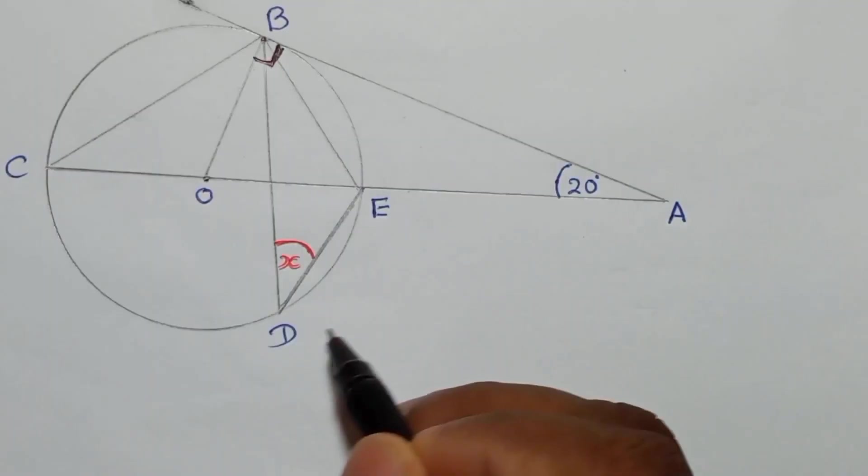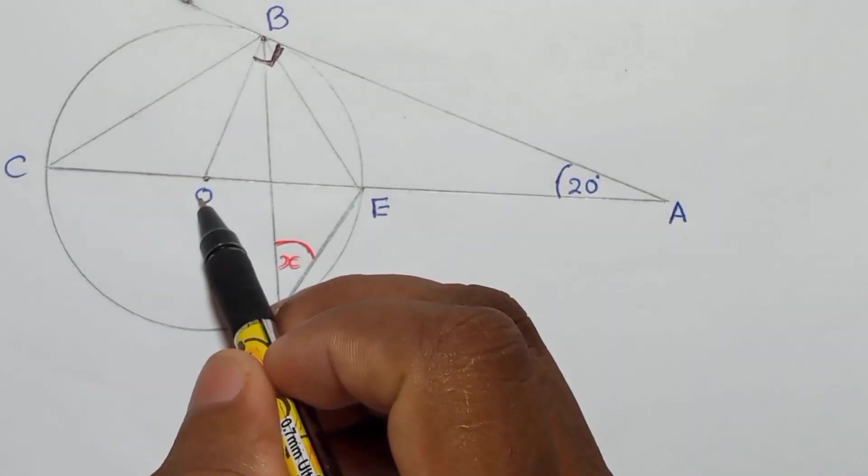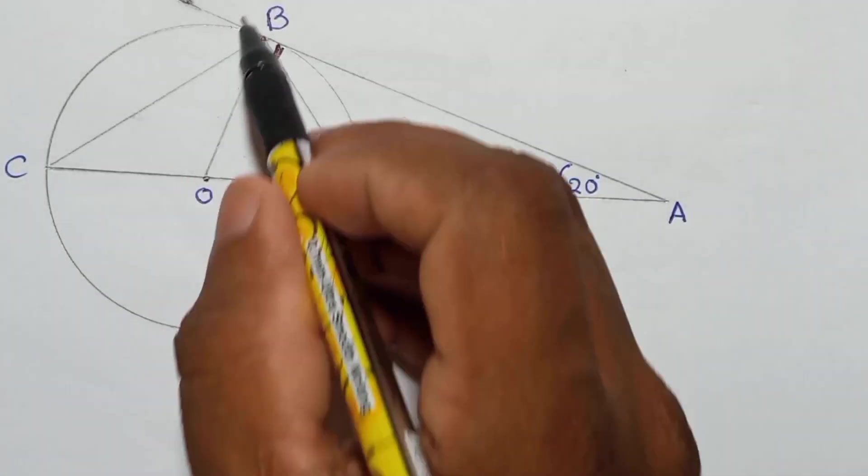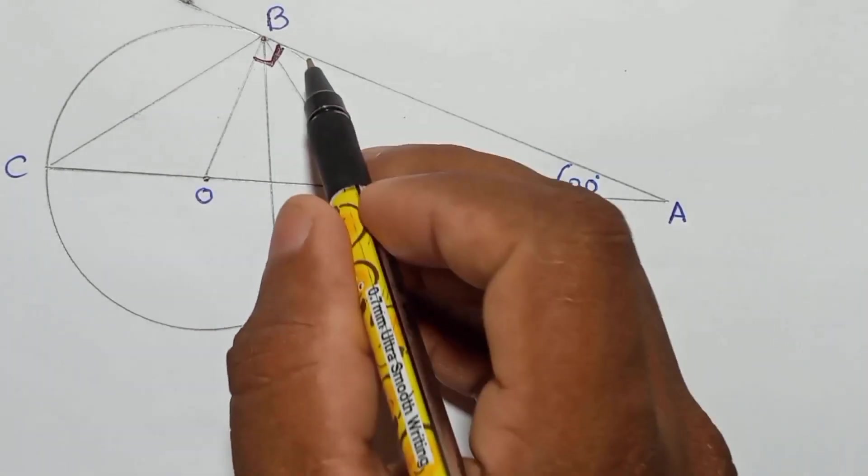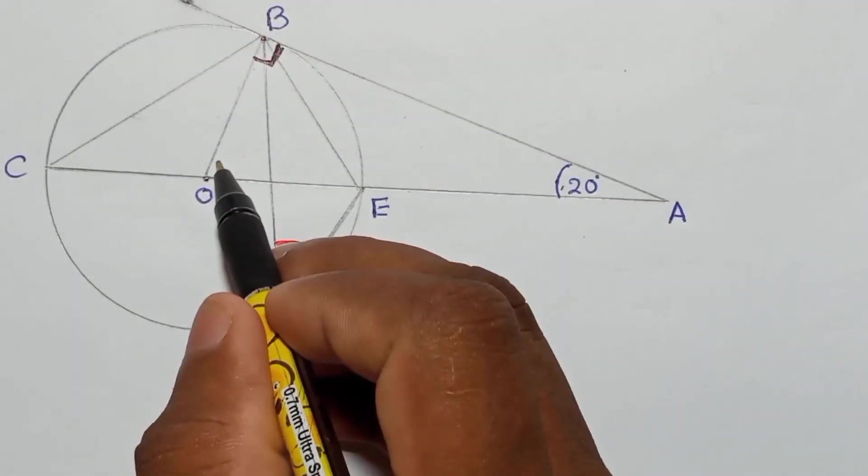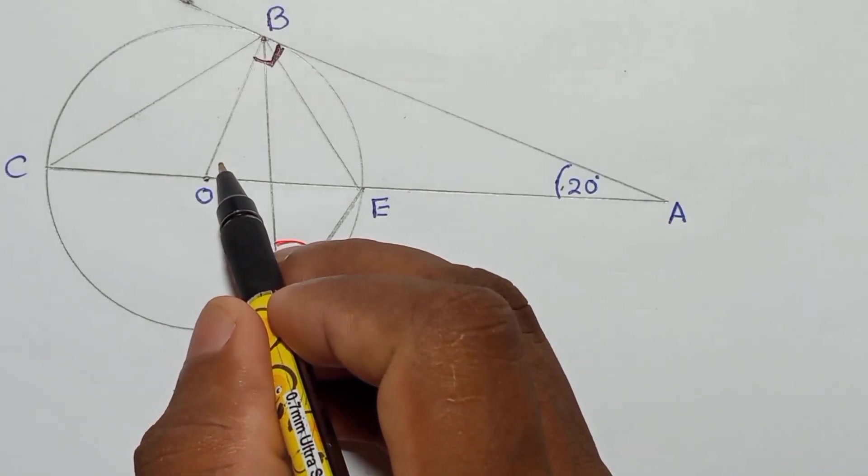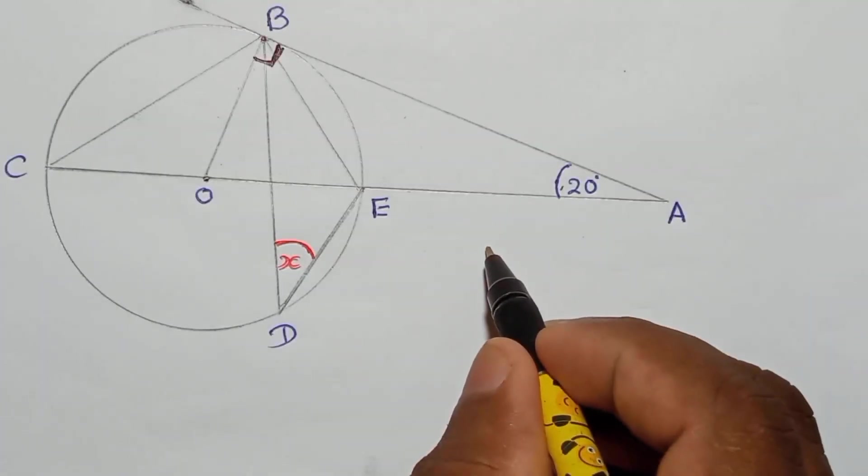That means if you consider triangle OBA, you can find this angle. How can we write? 90 plus 20 plus this angle should be 180.